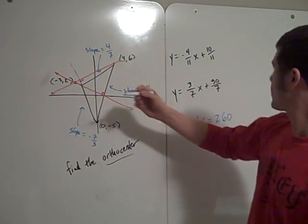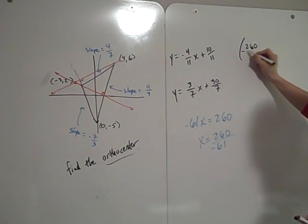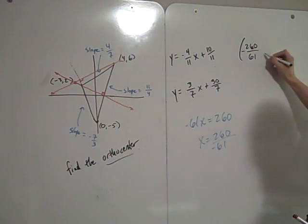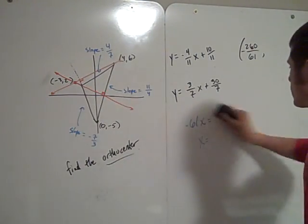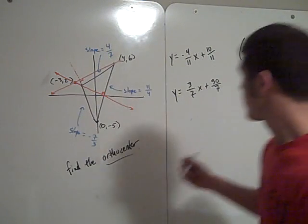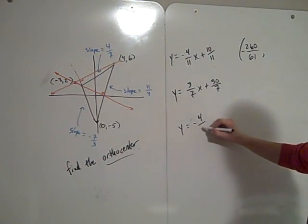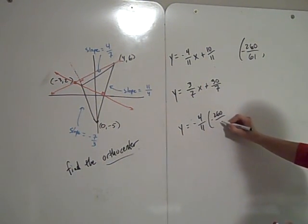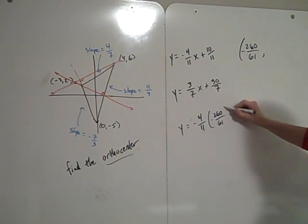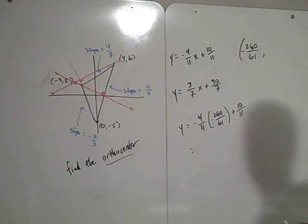The x value is negative 260 over 61. We have y is equal to negative 4 over 11 times x, which is negative 260 over 61, plus 10 over 11. Negative times negative is positive.